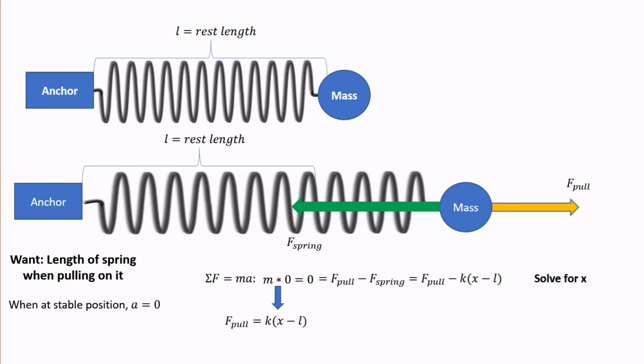First, we will put the spring force on the other side of the equation. Next, we divide both sides by k. Finally, we add the rest length to both sides. Great, we now have an equation. If I were to tell you what the pulling force is, what the spring constant is, and what the rest length is, you would be able to know what the final length is.